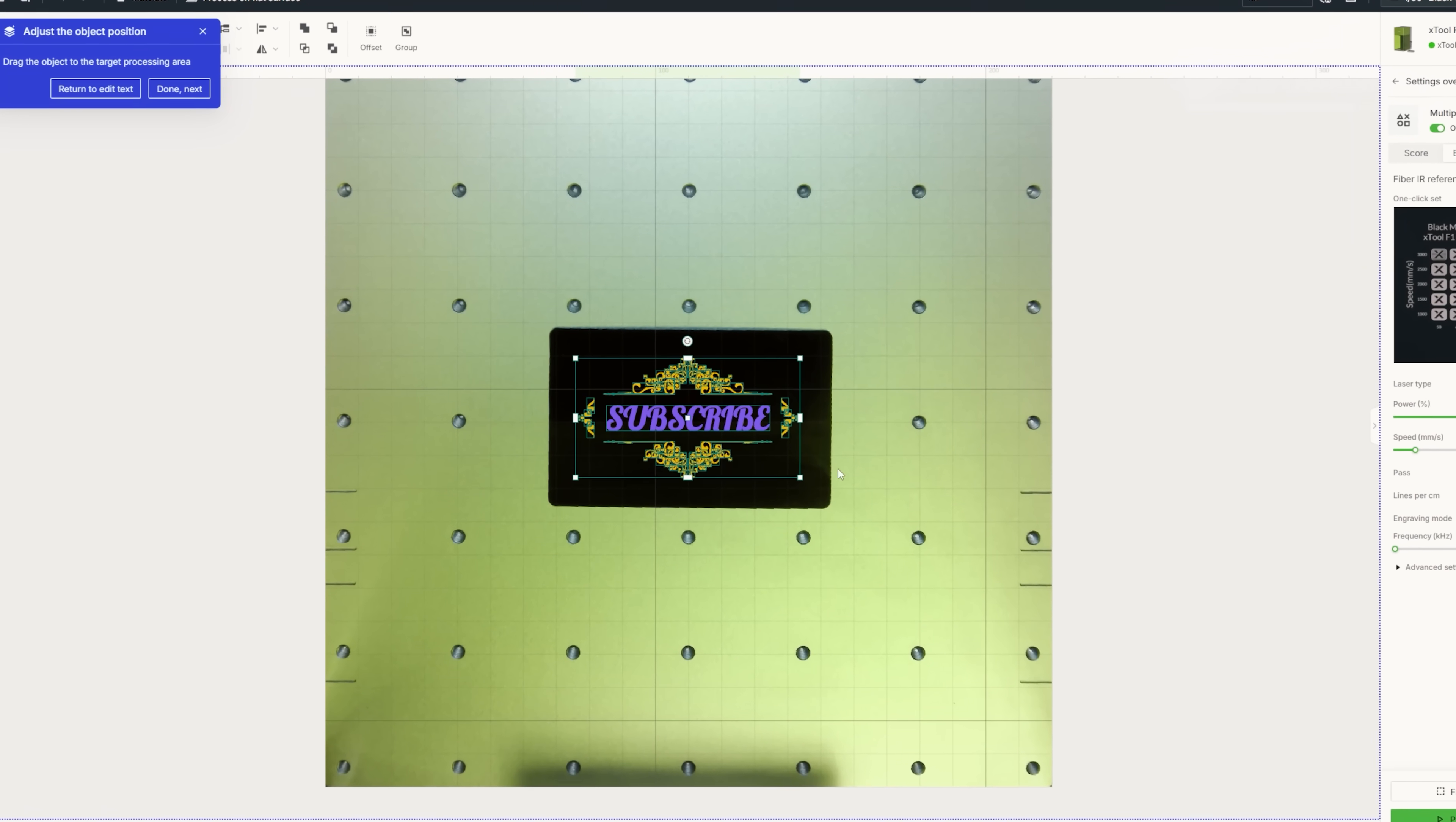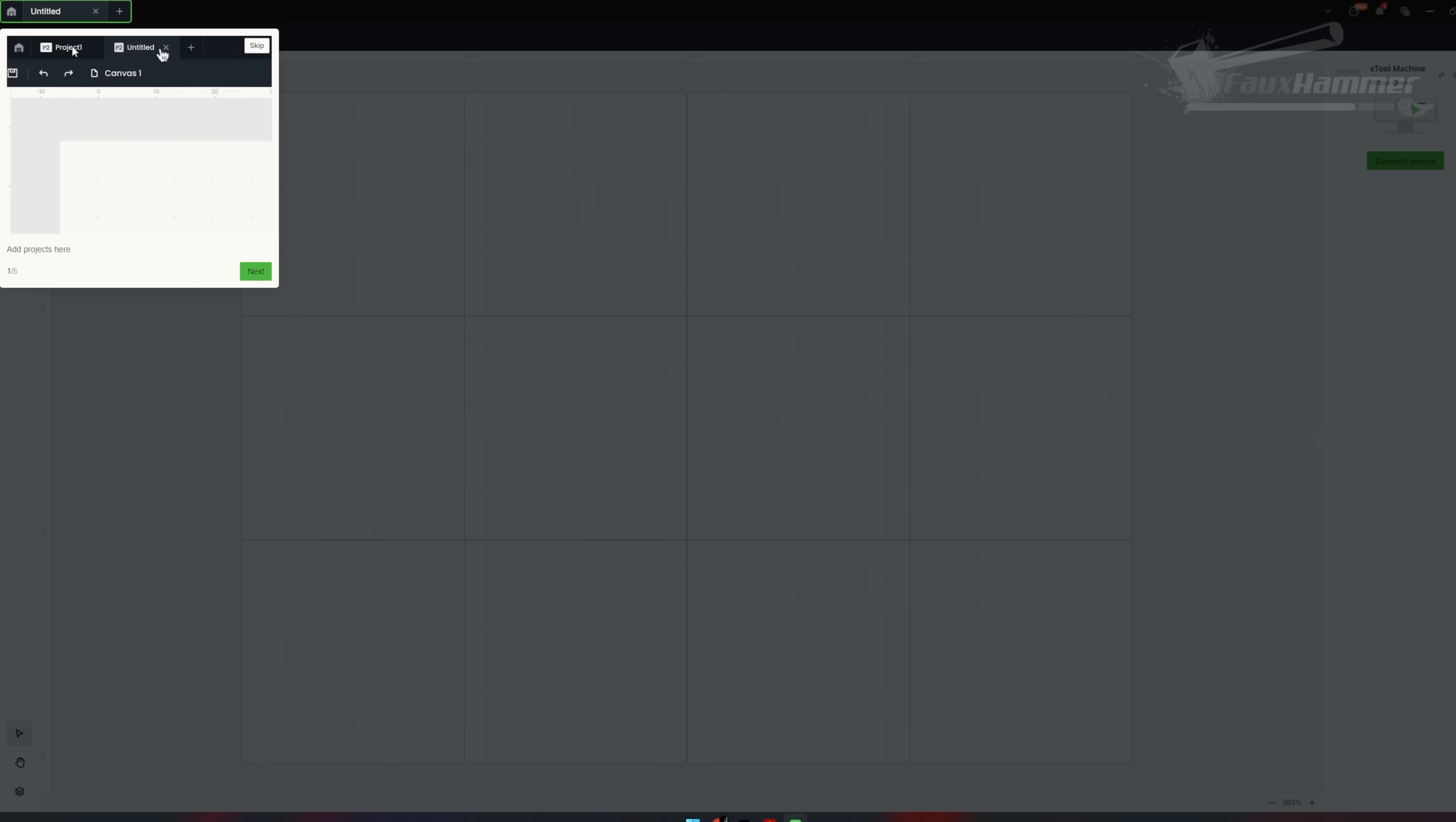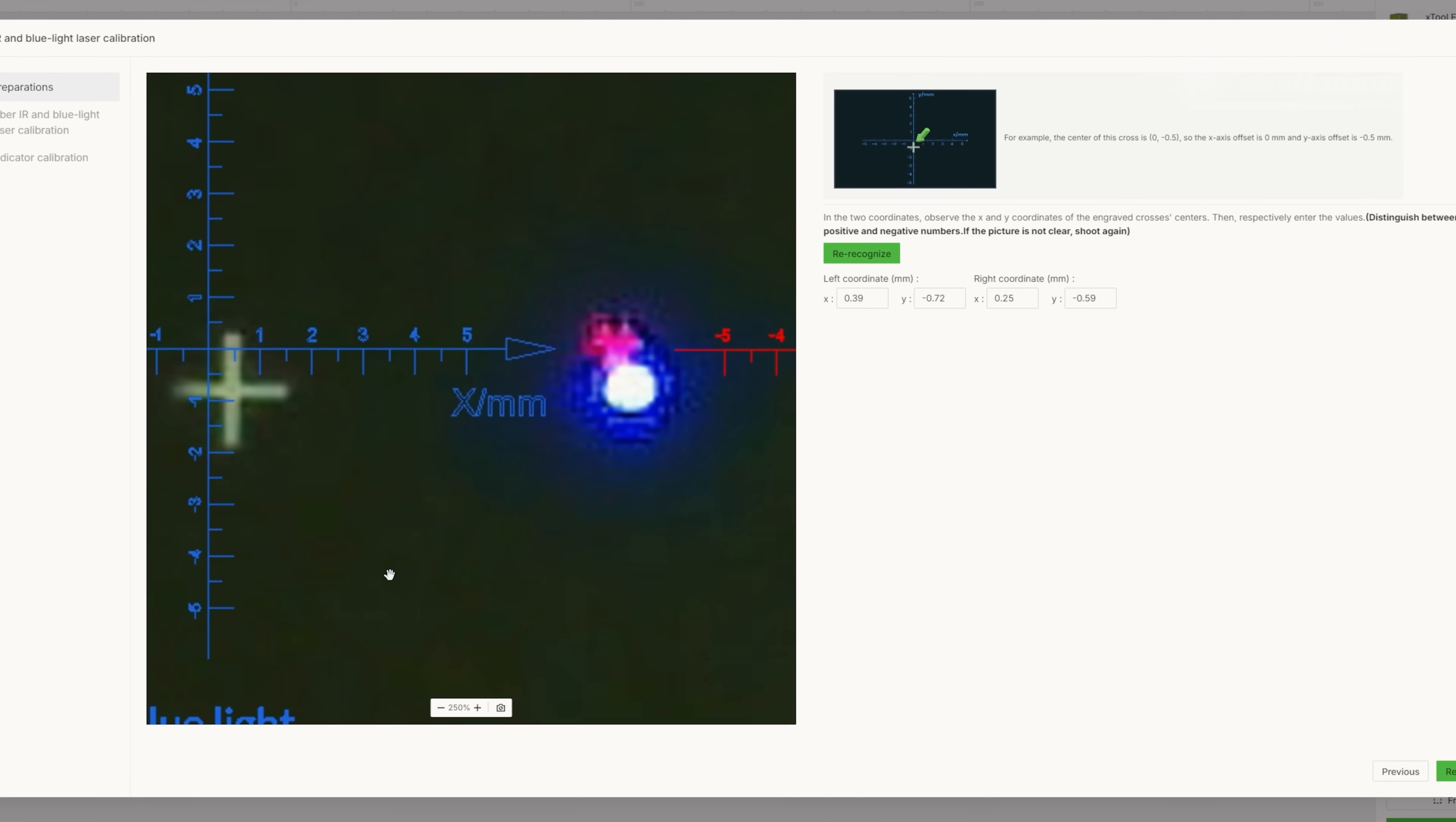But aside all that, using this thing is so simple. Seriously, a child could use it. Again, aside all the safety concerns. Don't let your child use it, ever. But yeah, when you start it up, the software runs you through everything. Calibration is as simple as engraving two crosses on paper, and it does that for you, tells you what to do. And then it auto-adjusts for camera alignment. Then you align the red laser with the blue one. You're good to go. But that should also be pretty much done for you already.